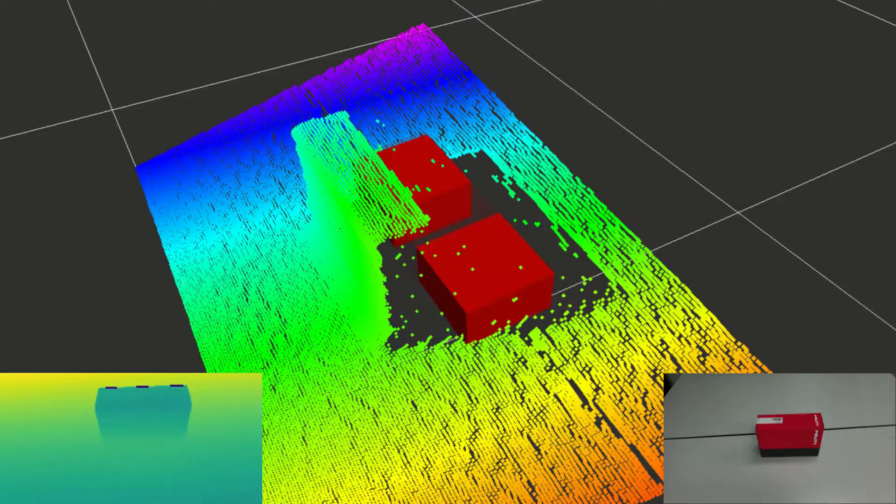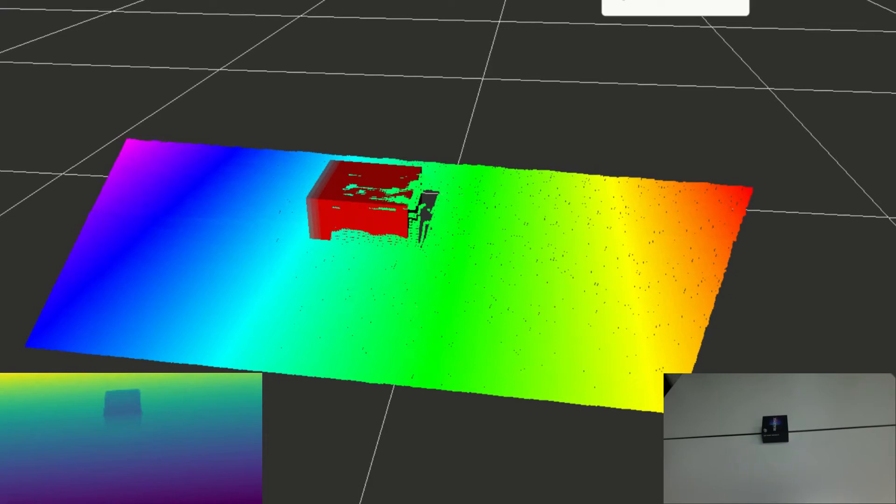After removing the second obstacle, the target object becomes visible. The particle filter quickly converges to the ground truth state.